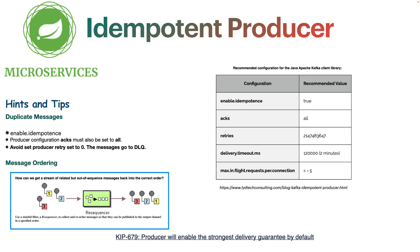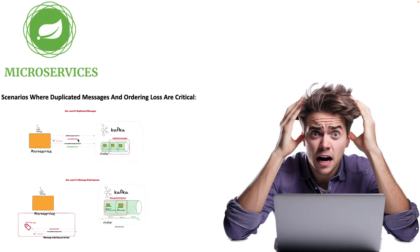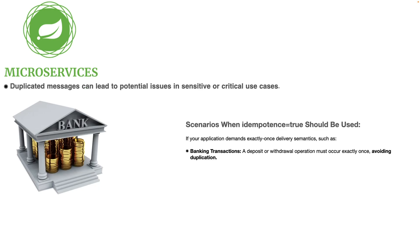So these are the two use cases we solved: duplicate messages and message ordering loss. We are talking about the idempotent producer. Duplicate messages can lead to serious issues in critical use cases — for example, in a banking system, deposit or withdrawal operations must occur exactly once. You cannot have duplication in such scenarios.